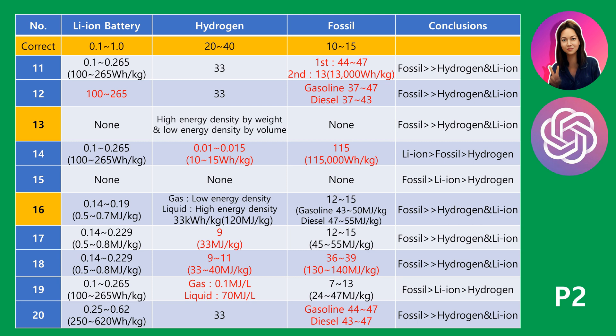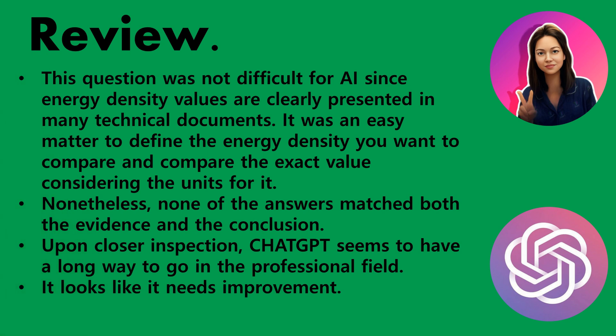Surprisingly, there was not one answer out of 20 that accurately presented each energy density value and correctly compared which was higher. The correct answer rate is 0%. Only three answers with correct evidence were relatively close to the right answer, but either they did not provide evidence or the conclusions differed from the evidence. This question was not difficult for AI, since energy density values are clearly presented in many technical documents. Nonetheless, none of the answers matched both the evidence and the conclusion. Upon closer inspection, ChatGPT seems to have a long way to go in the professional field and needs improvement.